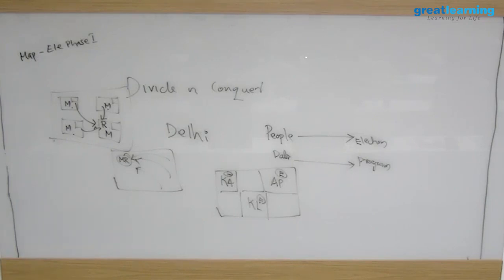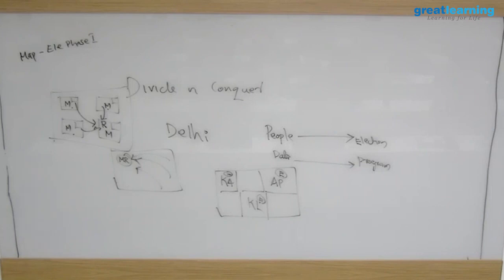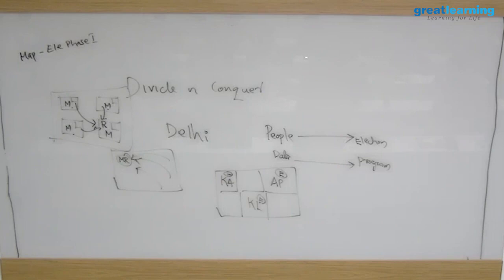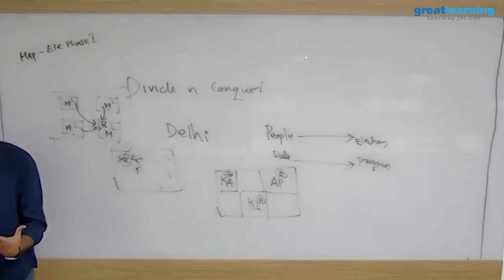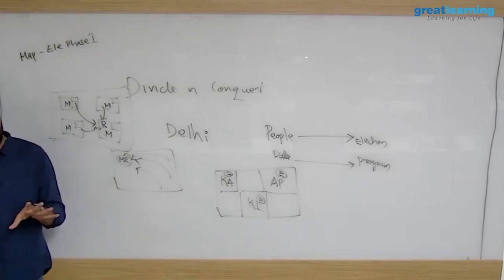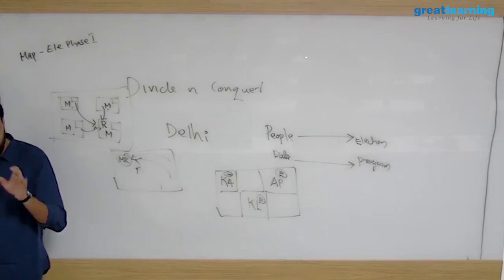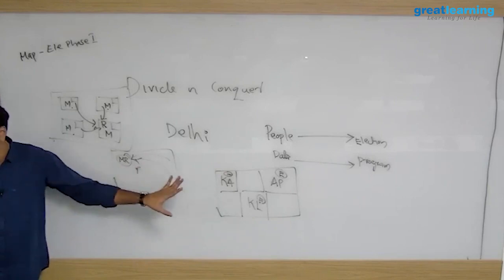By default there is only one reducer in a MapReduce program. With only four blocks, one reducer can aggregate everything. But if you're running 100 mappers and all output goes to a single machine, it becomes a bottleneck - like a traffic jam. The developer can specify in their code how many reducers they want. A common practical rule is 10% of the number of mappers: so for 100 mappers, call for 10 reducers. There has to be some calculation logic for this.